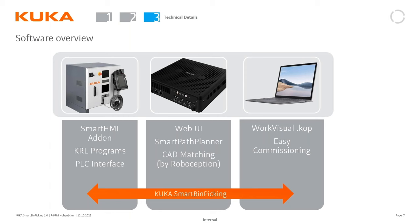The solution has three different elements on the control side. You've got your robot controller — the KRC5 — with Smart HMI add-ons, KRL programs, and PLC interface. Then there's an IPC running our Web UI, our Smart Path Planner, and Roboception's CAD matching software. And just like any other KUKA robot, you're using WorkVisual — there is a COP file, the option program file, so all menus and screens for WorkVisual configuration are there, covering IOs and the basics of setting up the robot.